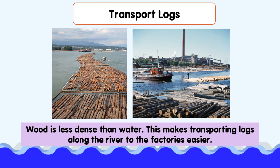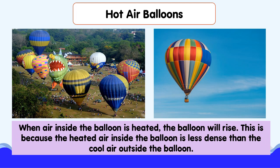Transport logs — wood is less dense than water. This makes transporting logs along the river to the factories easier. Hot air balloons: when air inside the balloon is heated, the balloon will rise. This is because the heated air inside the balloon is less dense than the cool air outside the balloon.